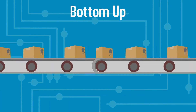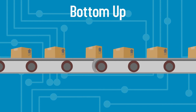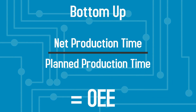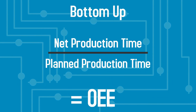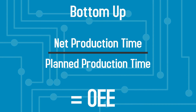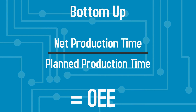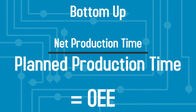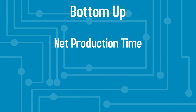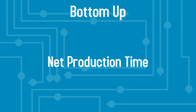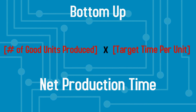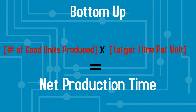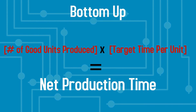The last method for calculating OEE is the bottom-up method. The bottom-up method is identical to the top-down method, also calculated by dividing net production time by planned production time. However, this method calculates net production time differently. Planned production time is considered a fixed variable, but net production time will vary based on the number of good units produced and the accuracy of your target cycle time per unit. This method solves for net production time by multiplying these two factors.